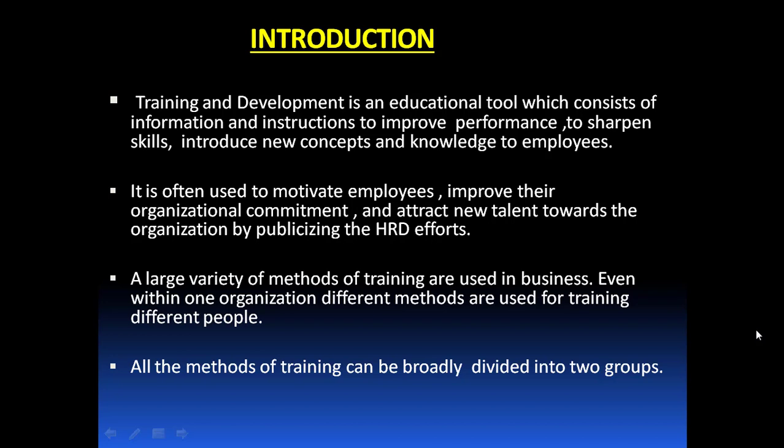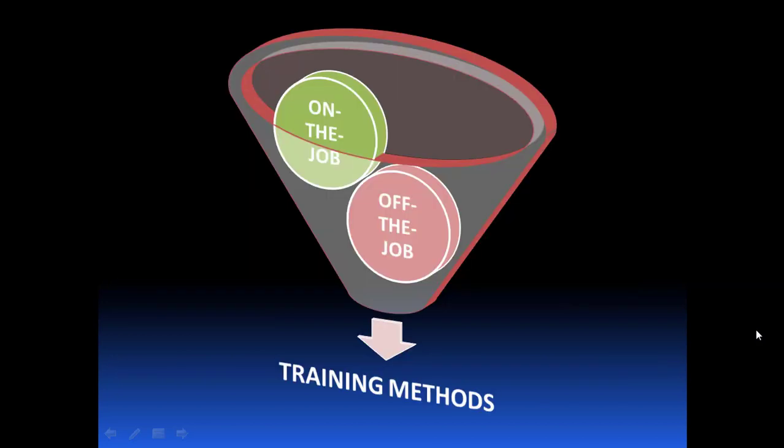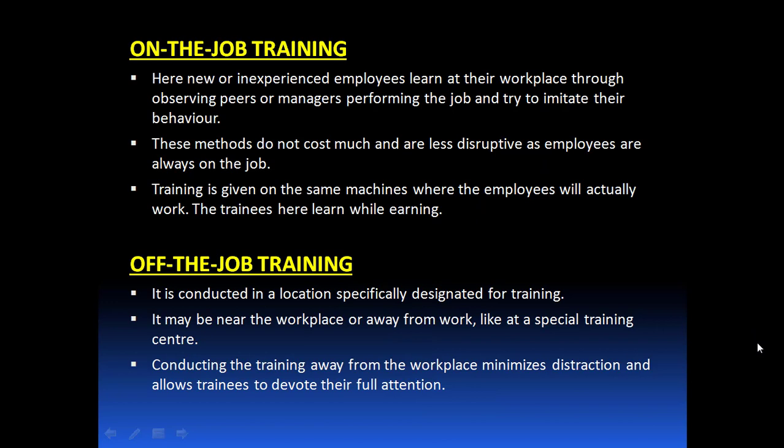All methods of training can be broadly divided into two major parts: on-the-job training methods and off-the-job training methods. In on-the-job training, as its name says, training is imparted to the employee while he is working. The training is imparted on the same machines or the same type of machines where the employee will actually work. These methods do not cost much and are very less disruptive — there is no break in work as the employees are always on the job. That is why this method is called learning while earning.